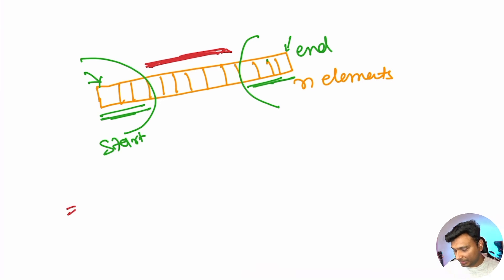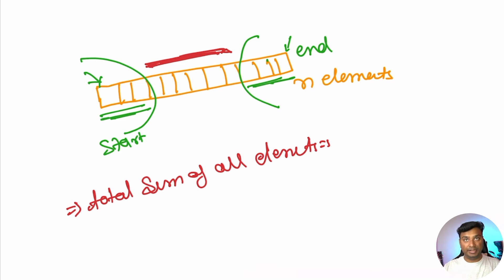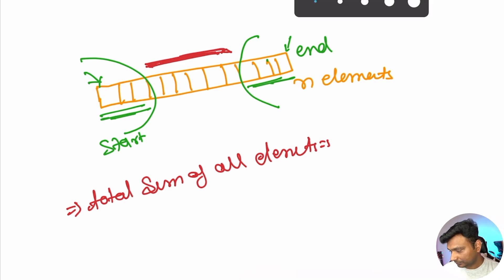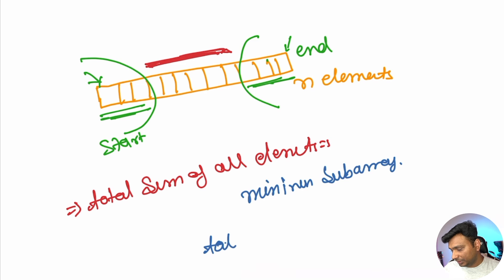Basically, if you get the total sum of all elements and subtract the minimum subarray in the middle, excluding the start and end, then you get your answer. So: answer = total sum minus minimum subarray.